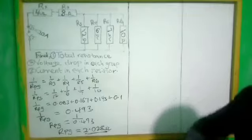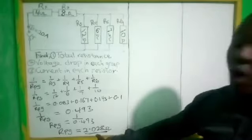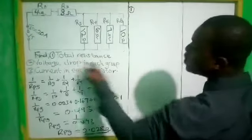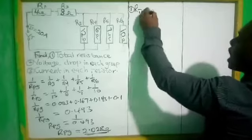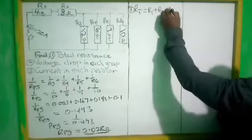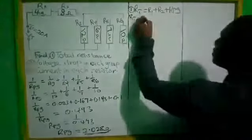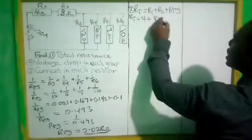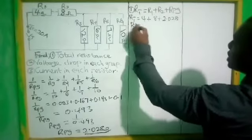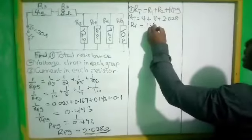So we have reduced these four resistors into one equivalent resistor. Now it's in series with R1 and R2. The total resistance is R1 plus R2 plus the parallel group resistance. R1 is 4 ohms, R2 is 8 ohms, and the parallel equivalent is 2.028 ohms. So total resistance is 4 plus 8 plus 2.028, which equals 14.028 ohms.